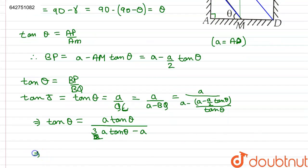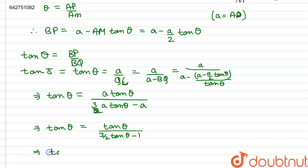On simplifying this further we can write tan theta equals tan theta by ((3 by 2) tan theta minus 1). Further we can write that tan theta equals 4 by 3.